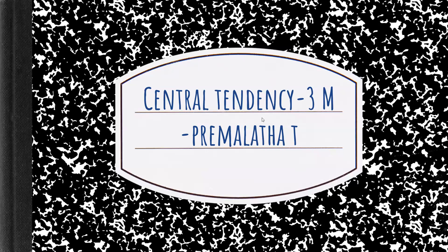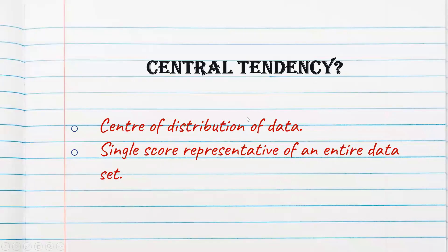First let us try to understand the terminology. Central tendency is nothing but about the center of the data. So what is central tendency? Central tendency is nothing but the center of distribution of data, which is nothing but a single score representative of an entire data set.